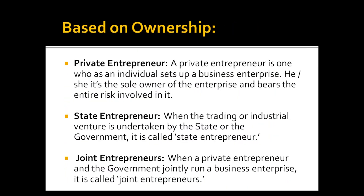Another classification is based on ownership: private entrepreneur, state entrepreneur, and joint entrepreneurs. A private entrepreneur is one who, as an individual, sets up a business enterprise — someone who bears the whole risk and is the sole owner, taking full responsibility of the business. A state entrepreneur is a venture wherein activities are undertaken, controlled, and managed by the state or the government. A joint entrepreneur is when a private entrepreneur and the government jointly run a business enterprise to pursue any objective.